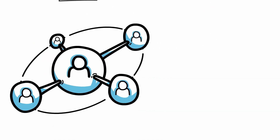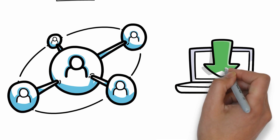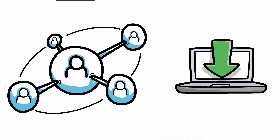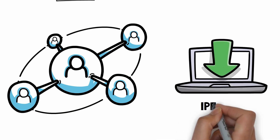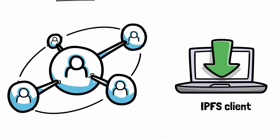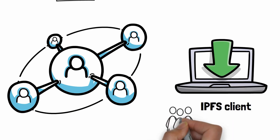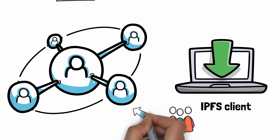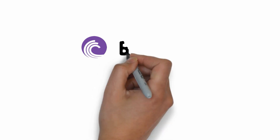To participate in the network, you have to run a software called an IPFS client, and anybody can join the network — there isn't any centralized authority. But we already have peer-to-peer networks like BitTorrent.